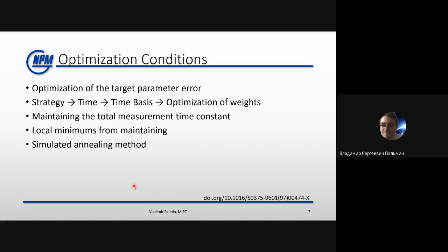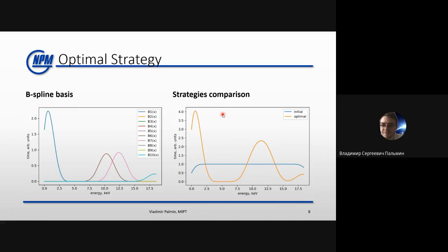This constraint leads to some local minima, and if you want to avoid them you can use a stochastic method like simulated annealing, which was used in this work. However, local minima are not such a great problem — the locally optimal strategy and globally optimal strategy differ very little. As a result, we get an optimal strategy, and the interesting thing is that there are two peaks. As I believe, they have different roles.